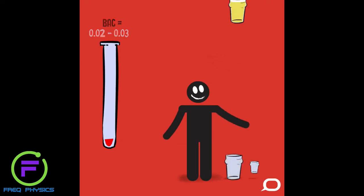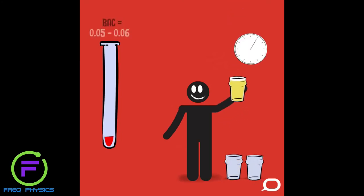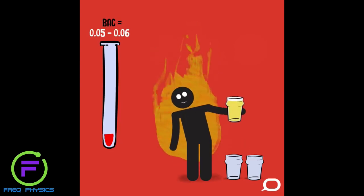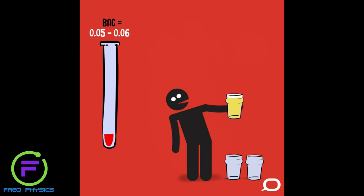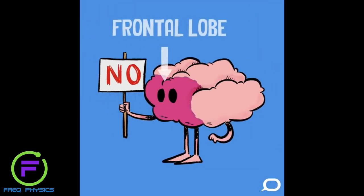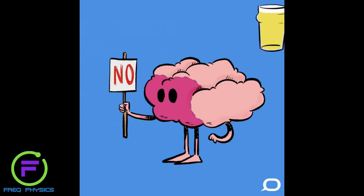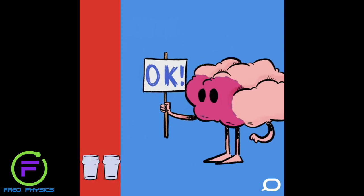After two to two and a half drinks in the first hour, your BAC climbs to about 0.05 to 0.06, and you might experience a feeling of warmth, relaxation, mild sedation, and you're likely to start talking more and feel less inhibited. These effects all happen in the brain's frontal lobe, which is responsible for stopping us from doing and saying socially inappropriate things. When alcohol enters the frontal lobe, it impairs our ability to control our behavior.